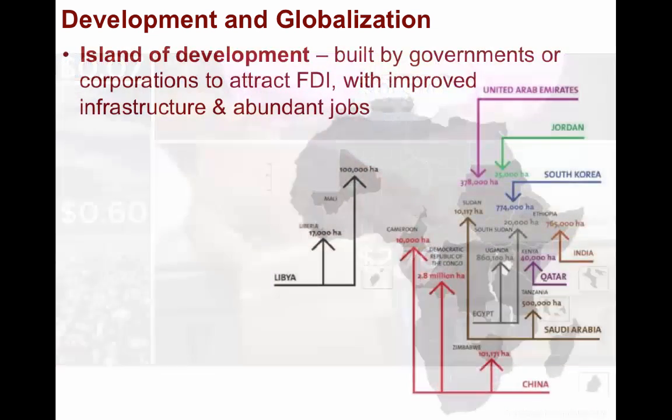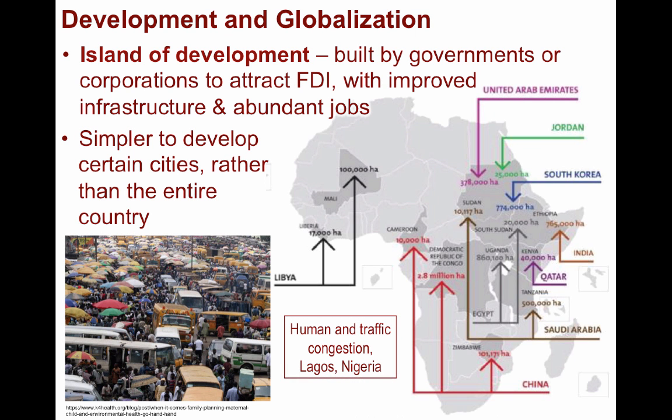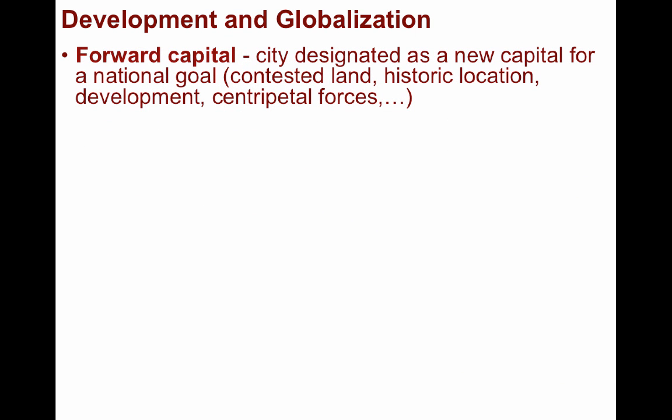Throughout the developing world, islands of development are formed by governments or corporations to attract foreign direct investment through constructing improved infrastructure and attracting abundant new jobs. It is simpler and less expensive to develop certain cities rather than spread development more evenly throughout the entire country. Additionally, most leaders want to showcase their capitals as signs of their productivity and progress toward development. In some instances, countries have established a forward capital — a city designated as a new capital for some national goal, whether over contested land, some historic location, or to aid in development and provide more centripetal forces for cultural purposes.